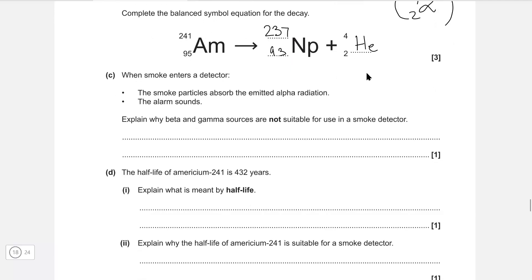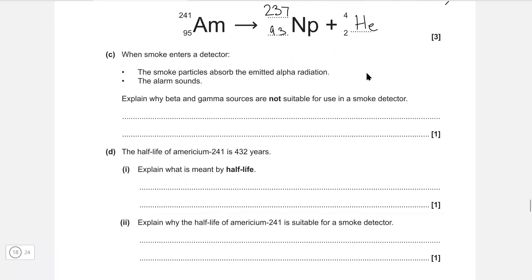When smoke enters a detector, the smoke particles absorb the emitted alpha radiation, and then the alarm sounds. Explain why beta and gamma sources are not suitable. Simply, they will just pass straight through, i.e., they will not be absorbed.